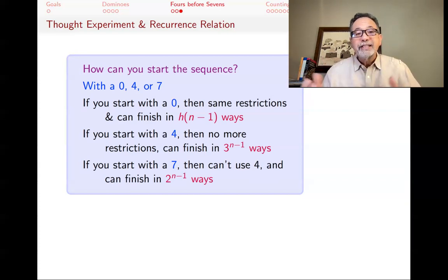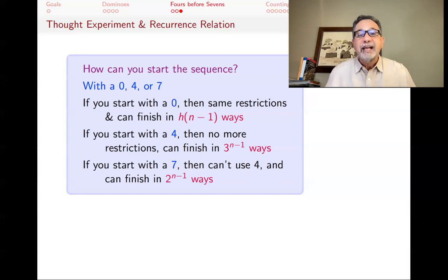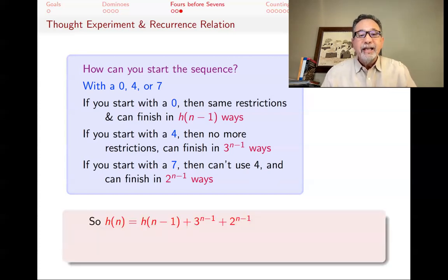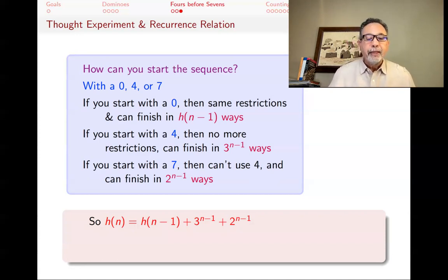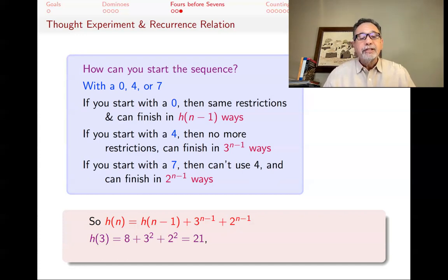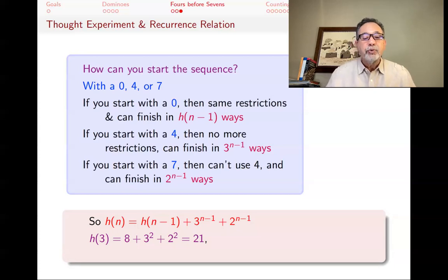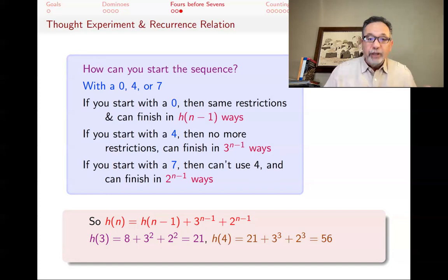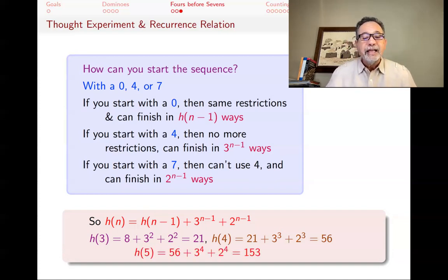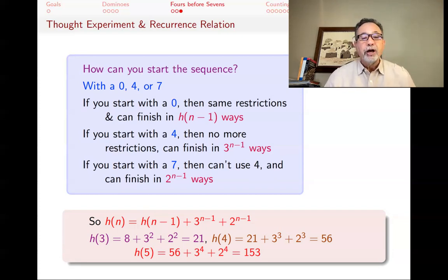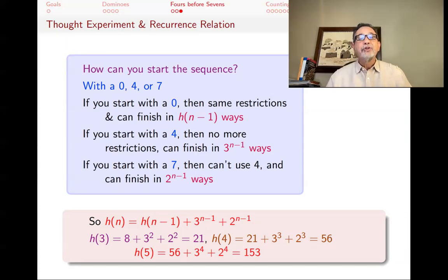These are the three cases — starting with 0, with 4, or with 7. They are mutually exclusive and cover all cases. Therefore the total is the sum of those three numbers: H(n) = H(n-1) + 3^(n-1) + 2^(n-1). So H(3) = 8 + 3² + 2² = 8 + 9 + 4 = 21. H(4) = 21 + 3³ + 2³ = 21 + 27 + 8 = 56. And H(5) = 56 + 3⁴ + 2⁴ = 56 + 81 + 16 = 153. So our original question — how many sequences of length five can you have with those conditions — the answer is 153. You see how powerful this method of recurrence relations is.